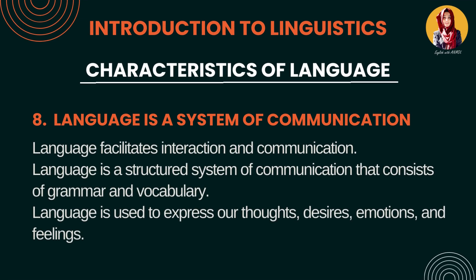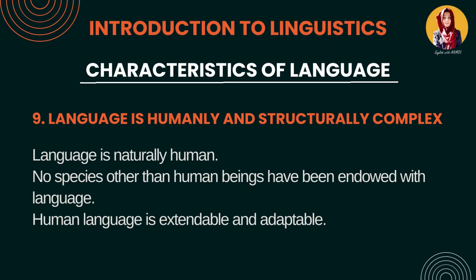Number 8: Language is a system of communication. Language ek communication ka system hai. Communication kya hai? Interaction — hum jo aapas mein baat-cheet karte hain, we exchange our ideas, thoughts, emotions, desires. Yeh hum language ke through karte hain. Language hamaari help karti hai ki hum ek doosre ke saath interact aur communicate kar sakein. Aur yeh ek structured system hai jisme grammar hai, vocabulary hai, aur kuch rules follow karne padte hain.